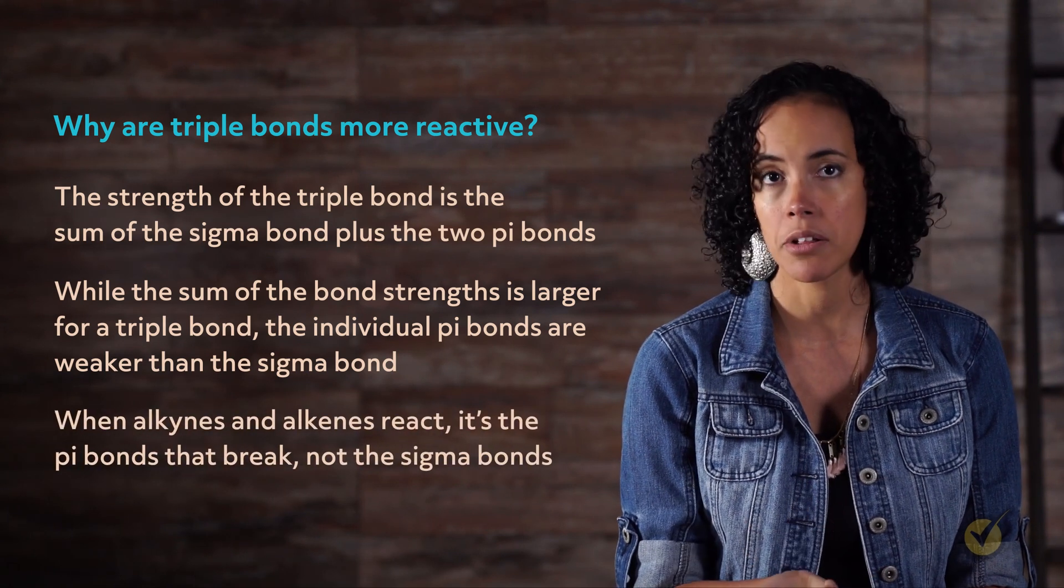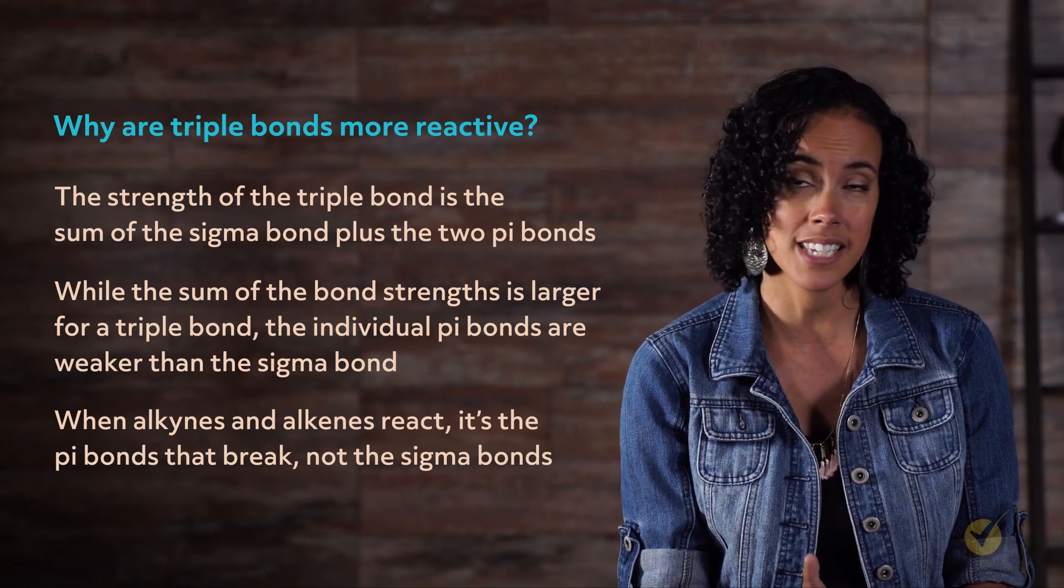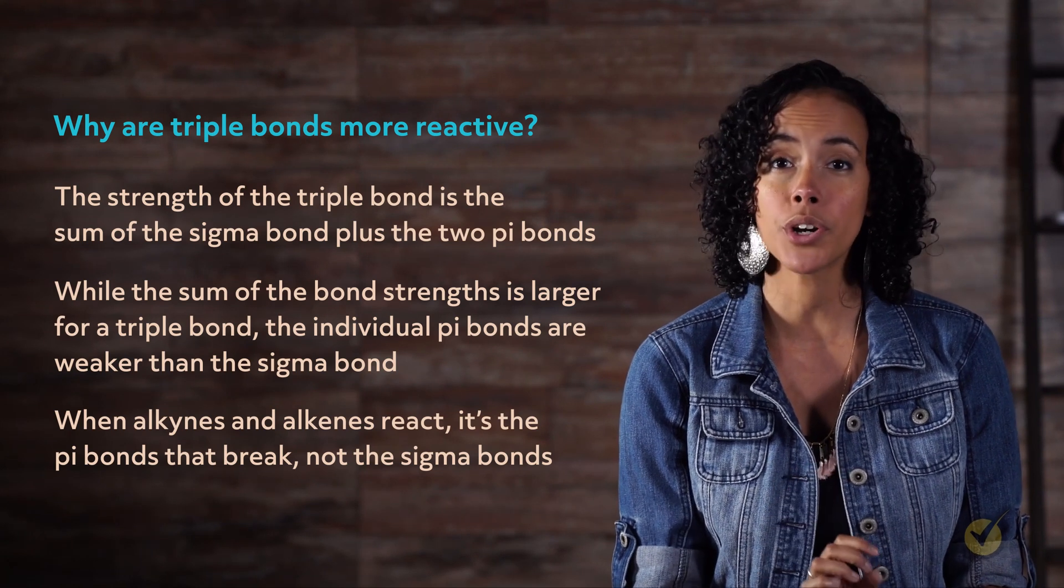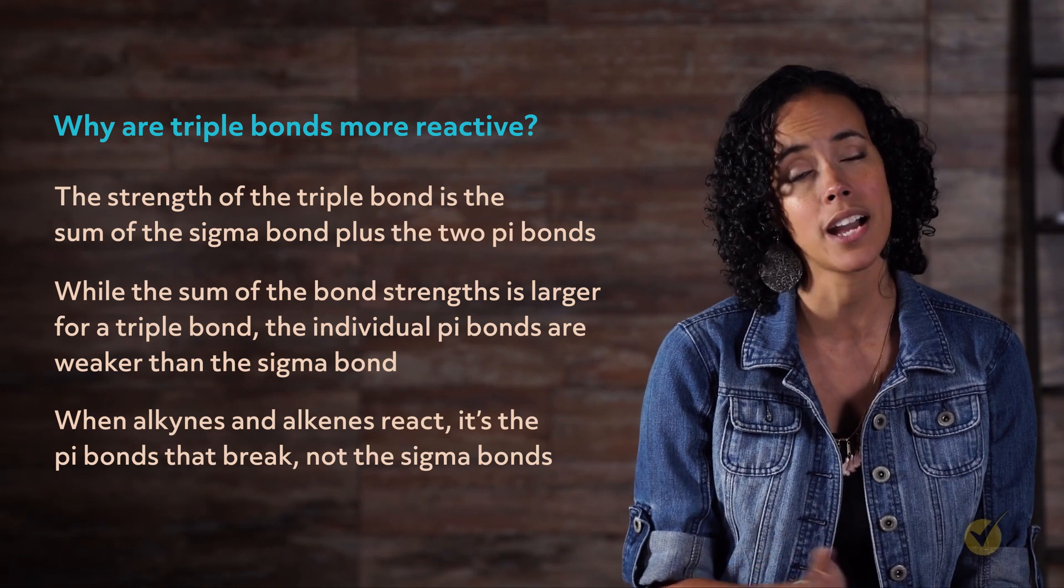When alkynes, and alkenes for that matter, react, it's the pi bonds that break, not the sigma bonds. So even though alkynes have a greater overall bond strength, the pi bonds are individually weaker and react more readily.